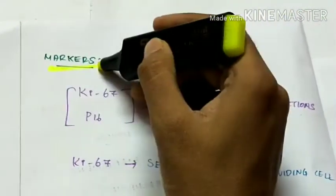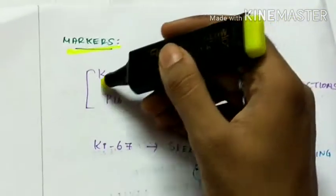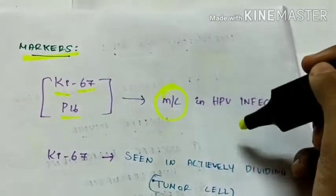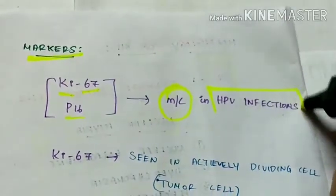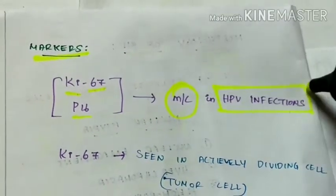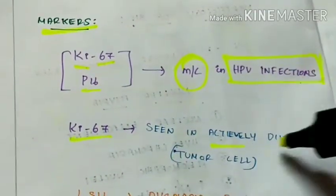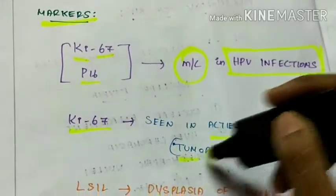Next the markers of SIL, ki67 and p16. These are the most common markers in case of HPV infections, human papilloma virus infections. The ki67 is seen in actively dividing cells that is the tumor cell.